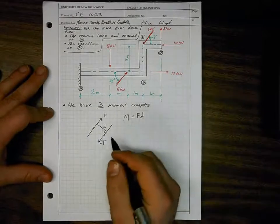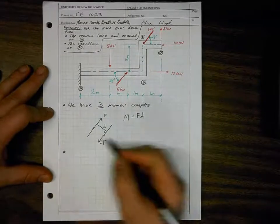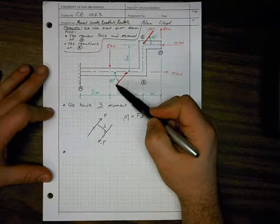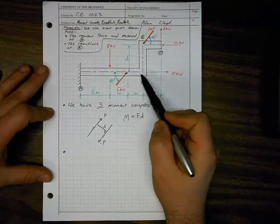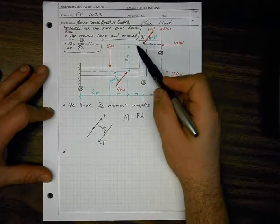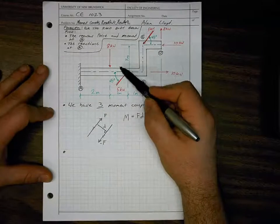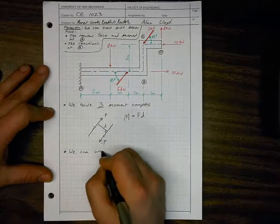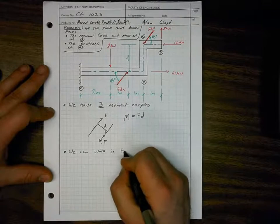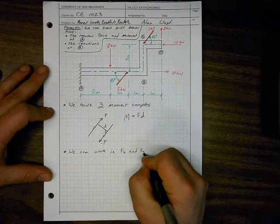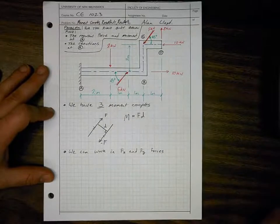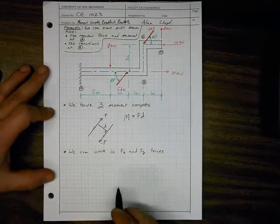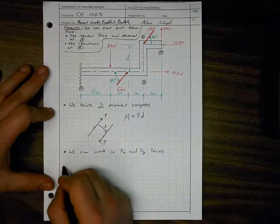We can either work in terms of vectors, using the 45-degree angle and finding perpendicular distances, or we can work in Cartesian coordinate systems with Fx and Fy force components, where the distances are even simpler to determine. Let's work in terms of all forces resolved into x or y systems. First, let's draw ourselves a free body diagram.